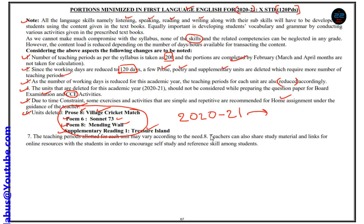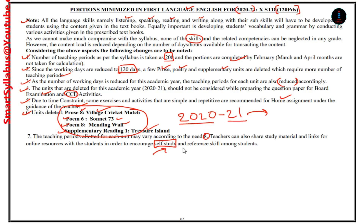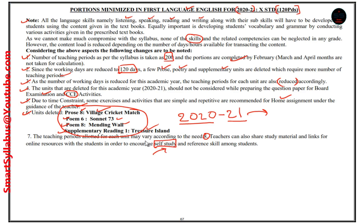Teaching periods allotted for each unit may vary according to need, so teaching periods are reduced compared to a regular year. Teachers can also share study material and links for online resources with students to encourage self-study. This year 2020-21, as the number of days are reduced and schools have not yet opened, there is a big responsibility on students. Now let's find out for each particular topic how many periods are reduced and what changes are there.